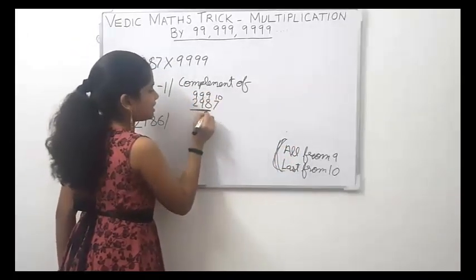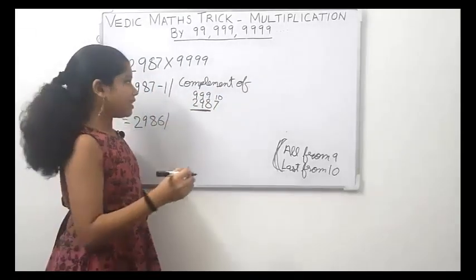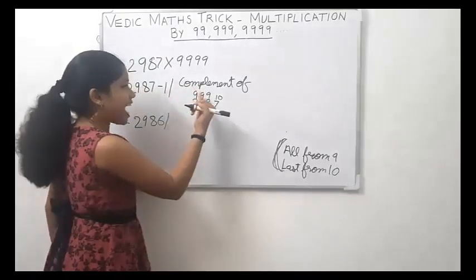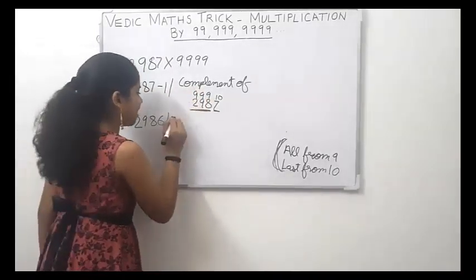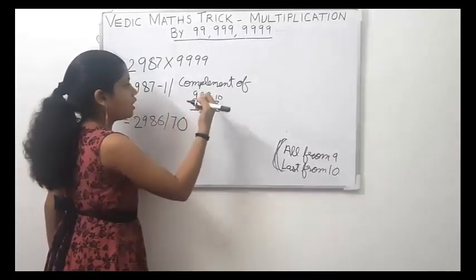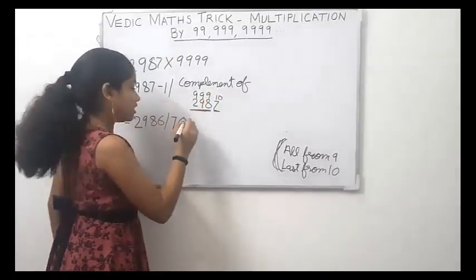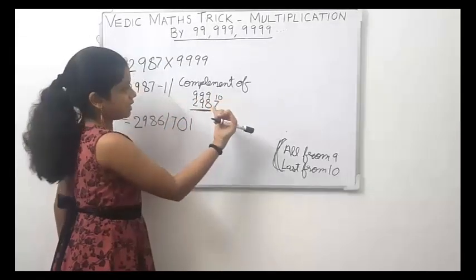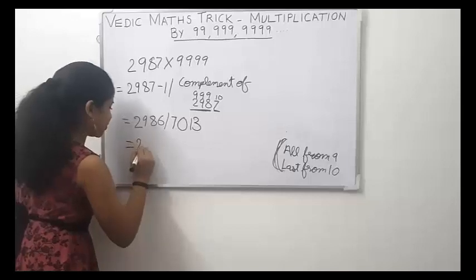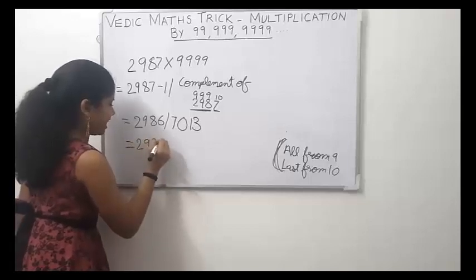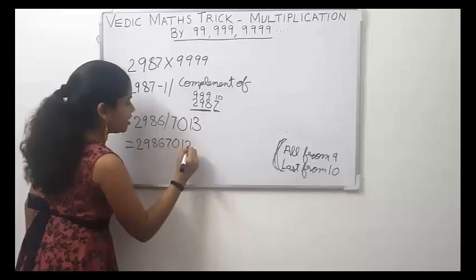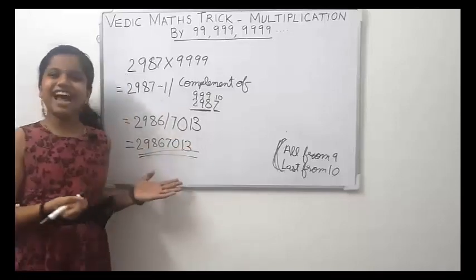Apply the rule — all digits subtracted from 9 and the last digit from 10: 9 minus 2 is 7, 9 minus 9 is 0, 9 minus 8 is 1, 10 minus 7 is 3. So our answer is 29867013. This is our answer.